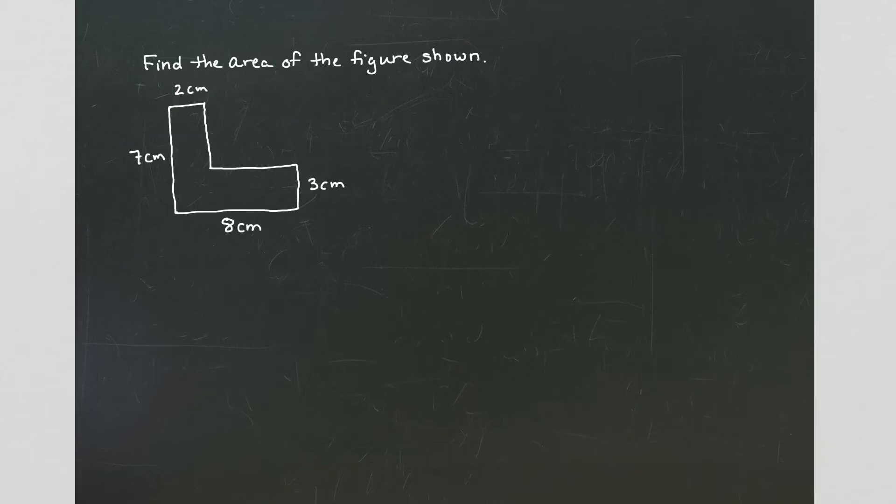So let's talk area. Specifically, I want to find the area of the figure shown below. Now we're used to getting area of specific shapes like rectangles and squares and triangles, but this shape is a little different. It's an L shape, so it's not a regular geometric shape for which we normally are able to calculate the area.